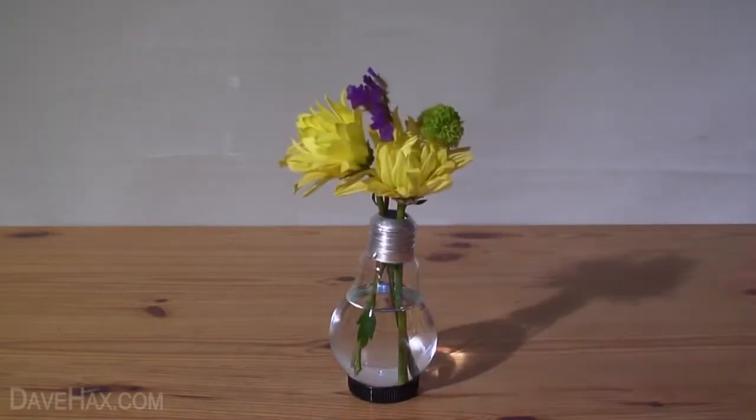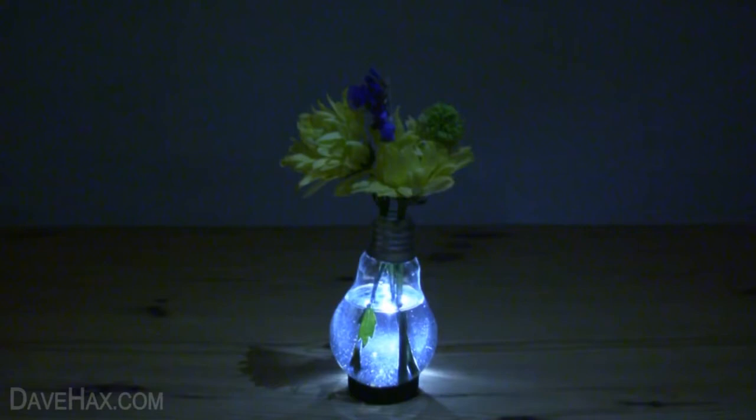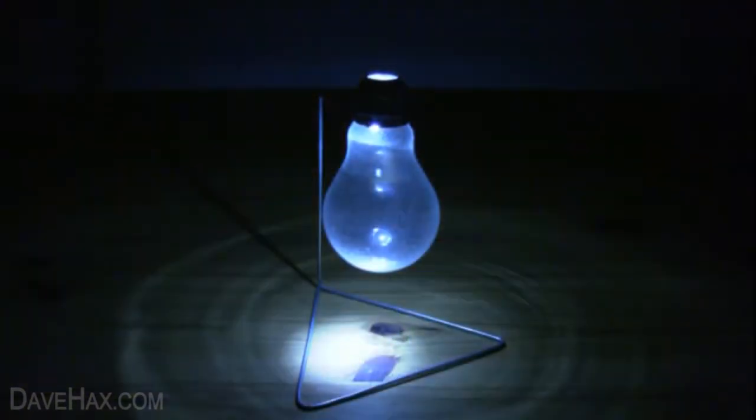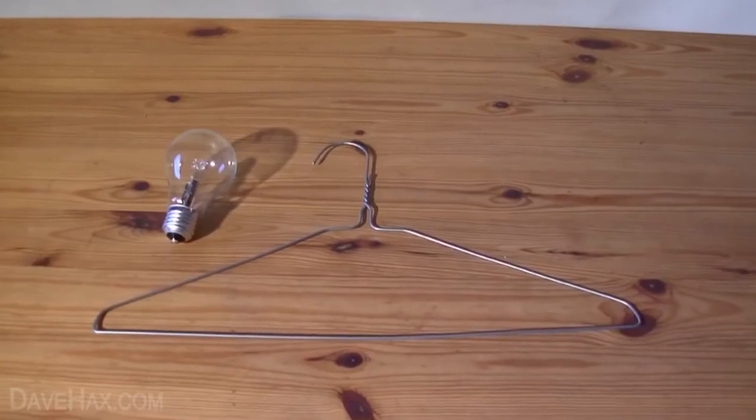Today I'm going to show you how to make a really cool light bulb vase. We're going to use a screw fit light bulb and a wire coat hanger.